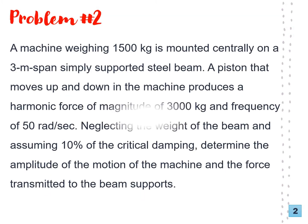So we have a problem here. A machine weighing 1500 kg is mounted centrally on a 3-meter-span simply supported steel beam. A piston that moves up and down in the machine produces a harmonic force of magnitude of 3000 kg and frequency of 50 rad/sec. Neglecting the weight of the beam and assuming 10% of the critical damping, determine the amplitude of the motion of the machine and the force transmitted to the beam supports.